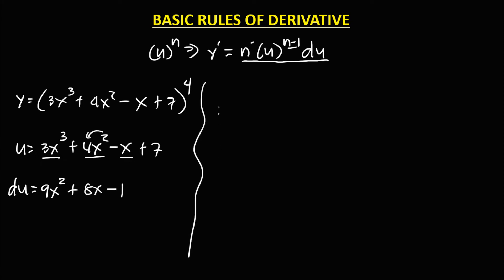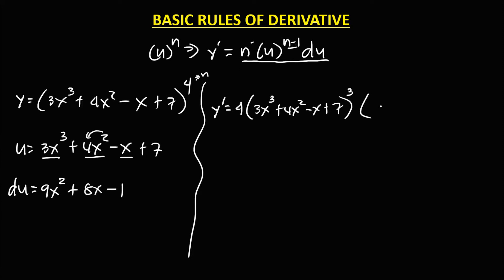So 2 times 4 gives 8x. The derivative of x is 1, so du equals 9x squared plus 8x minus 1. To find the derivative, n is 4, so y prime equals 4 times u — 3x cubed plus 4x squared minus x plus 7 — to the power n minus 1, which is 3.